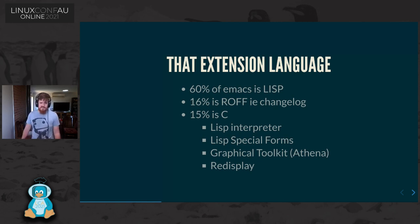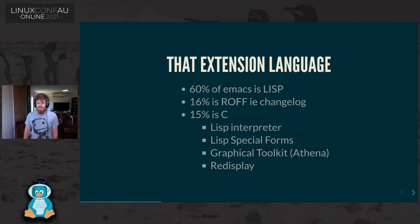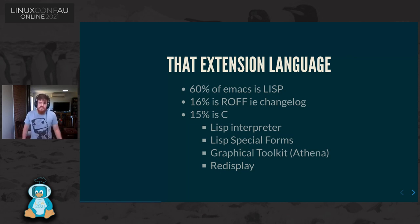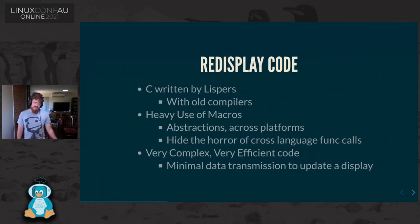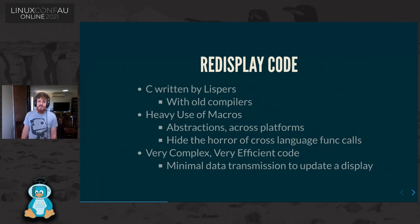The remaining 15% at the bottom is porting to every other language — X toolkits, the old Athena X toolkit, Lisp special forms, and redisplay. Redisplay code was C written by Lispers for Lispers, with some compilers that predate a lot of the standards. Emacs has history dating from the early 80s, so C standards just weren't yet established. And there are tons of macros — just about every call you need involves using two or three macros to abstract away 40 years of history.